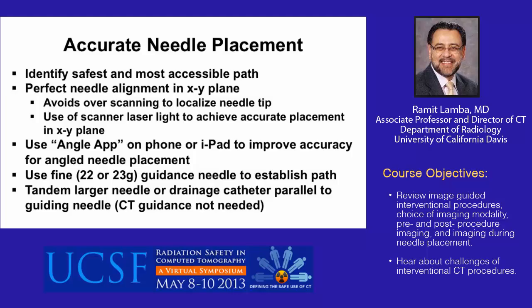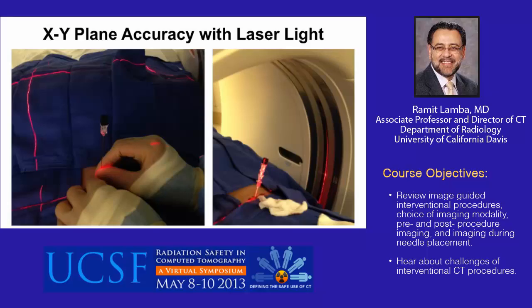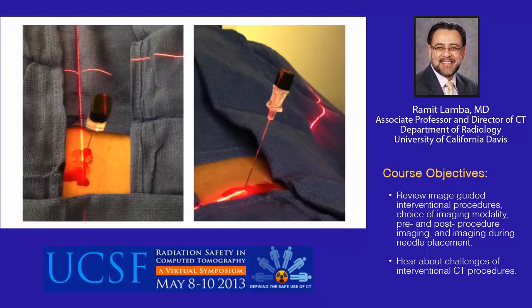Here we are using the outer scanner light — about 12 inches outside of the gantry — to help guide accurate needle placement in the X-Y plane. In the image on the left, the light is not intersecting the hub of the needle, but after a little adjustment, we are able to get the laser light to intersect the hub of the needle, resulting in perfect needle alignment in the X-Y plane.